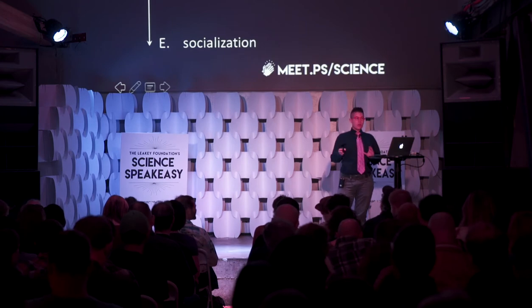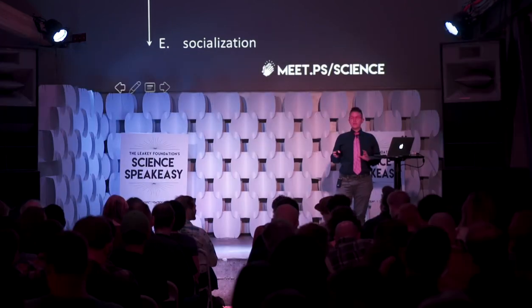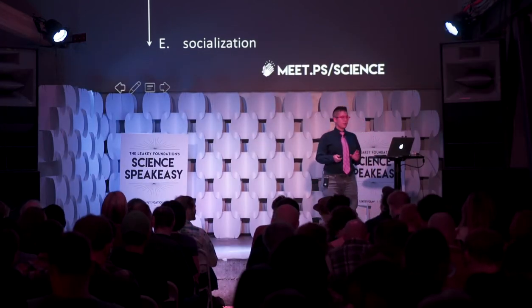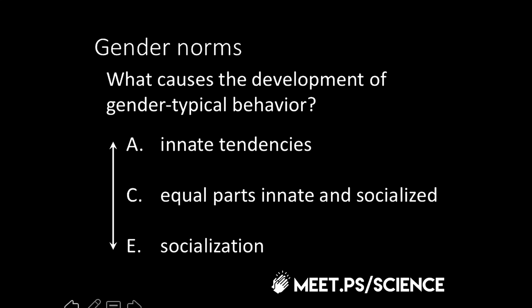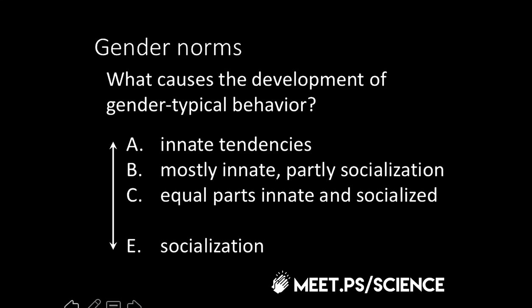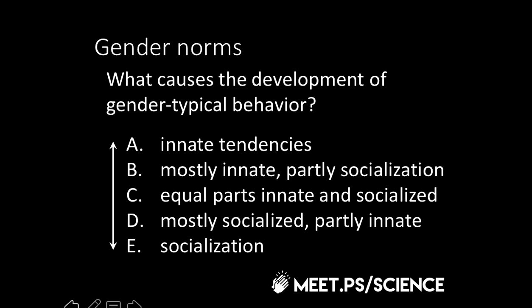I imagine almost everybody in this audience has engaged with this question at some point. The possible answers range from A — the expression of innate gendered tendencies — to E — being overtly socialized by people external to the individual. Or maybe it's C, equal parts innate and socialized. Or B, mostly innate but partly socialized. Or D, mostly socialized but partly innate.